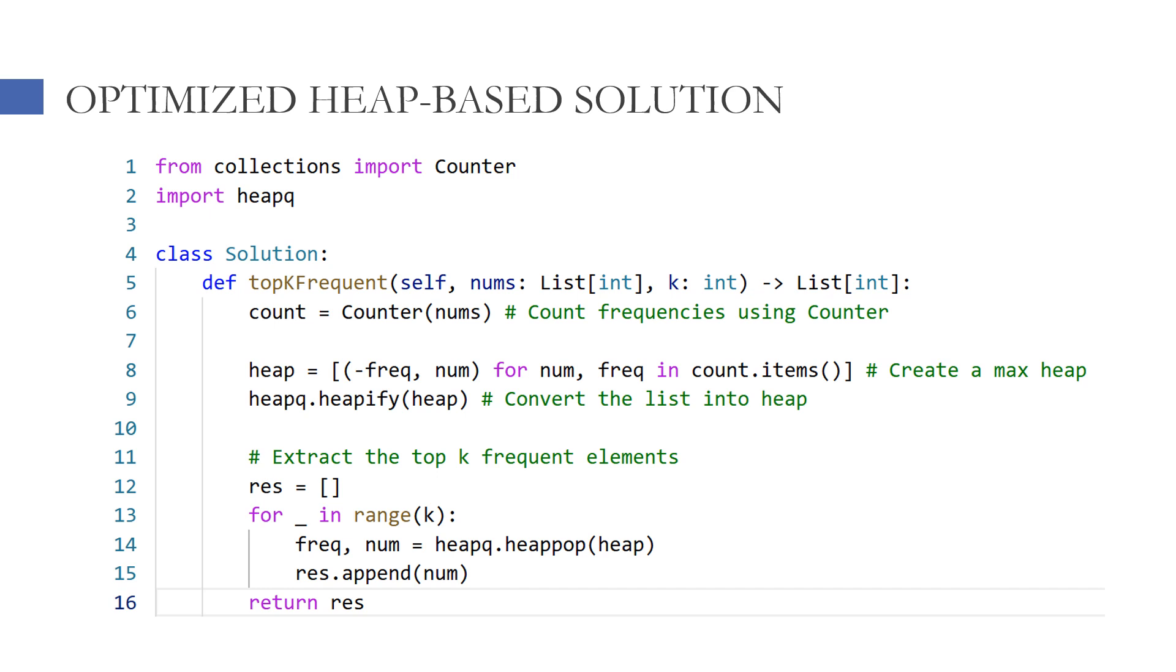First, we use Python's Counter to count frequencies. Then, we use heap to keep track of top k frequent elements. Since Python's heapq is a min heap by default, we simulate a max heap by using negative frequency.